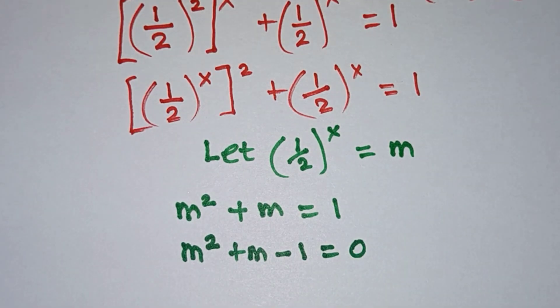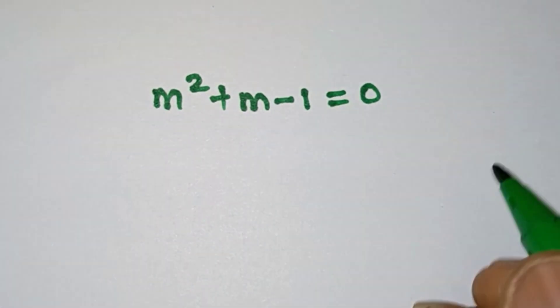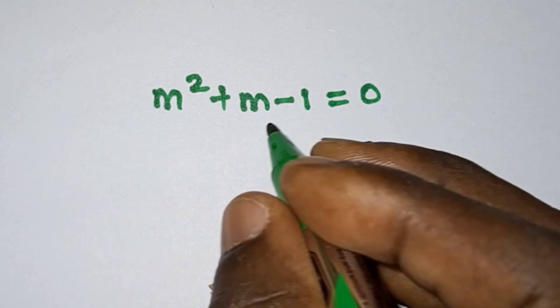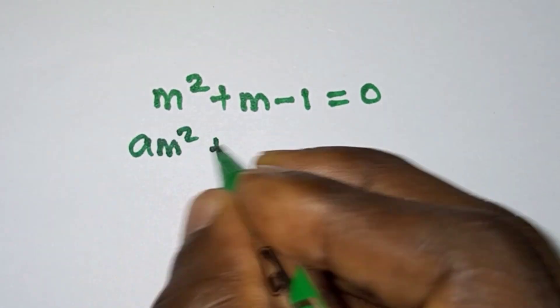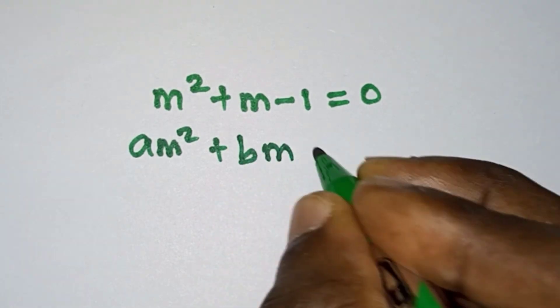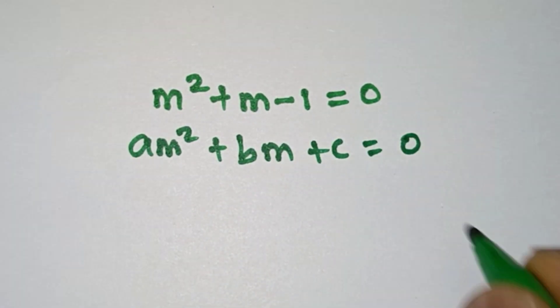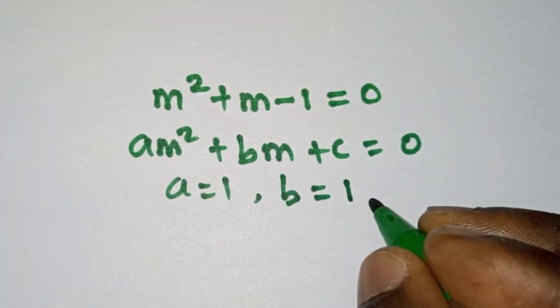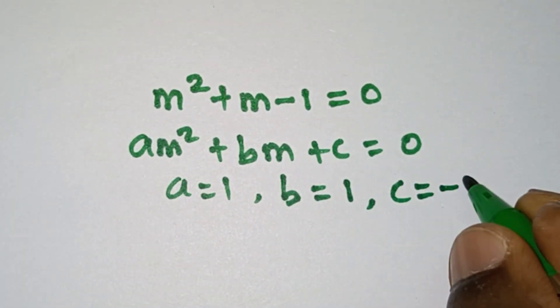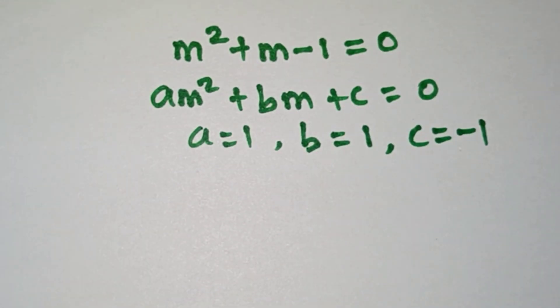I have copied down the quadratic equation once again. If we compare this to the general quadratic equation am^2 + bm + c = 0, we see that a = 1, b = 1, and c = -1.